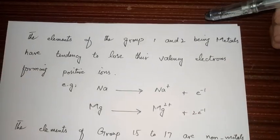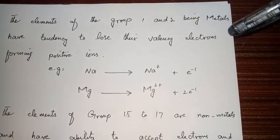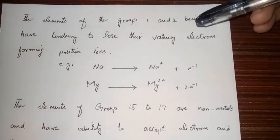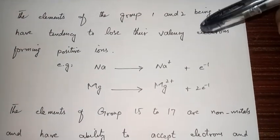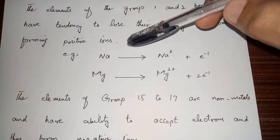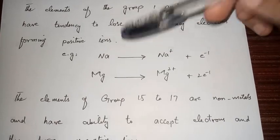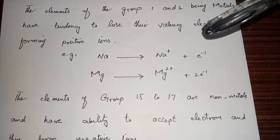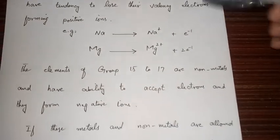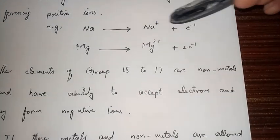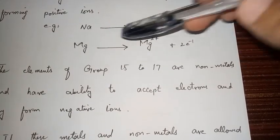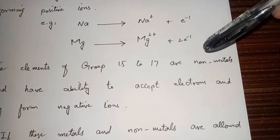The elements of Group 1 and Group 2, being metals, have a tendency to lose their valence electrons. They are electropositive atoms — they have less hold on their valence electrons, so to complete their octet and become stabilized, they prefer to lose electrons. For example, sodium loses its valence electron and becomes a sodium ion, and magnesium loses its final two electrons and becomes a magnesium ion.